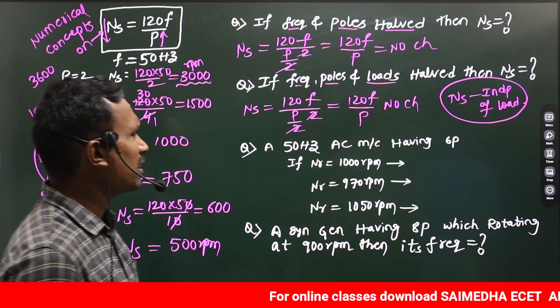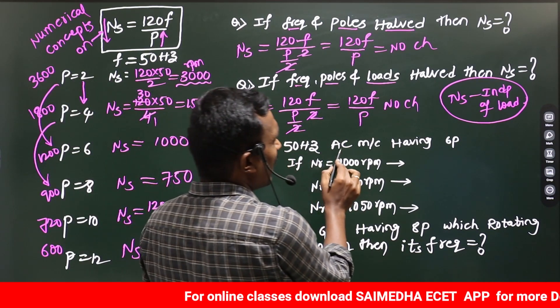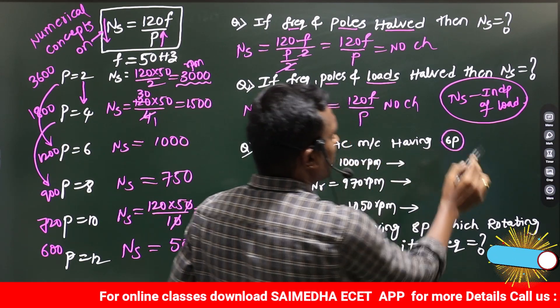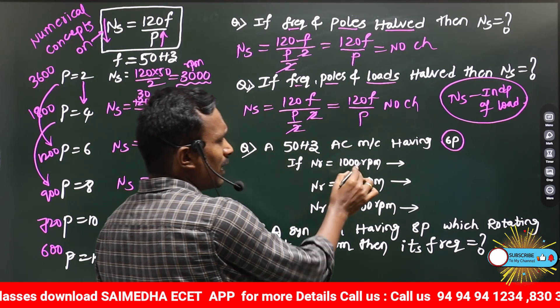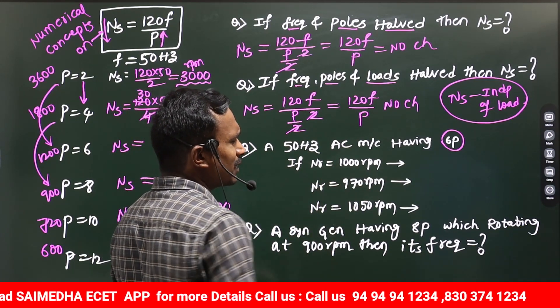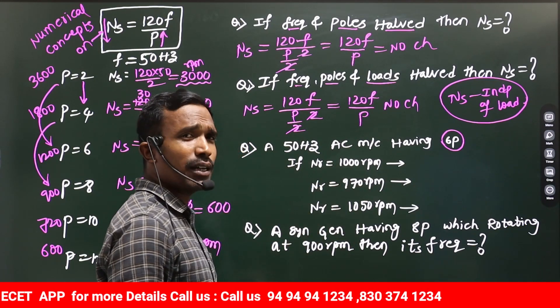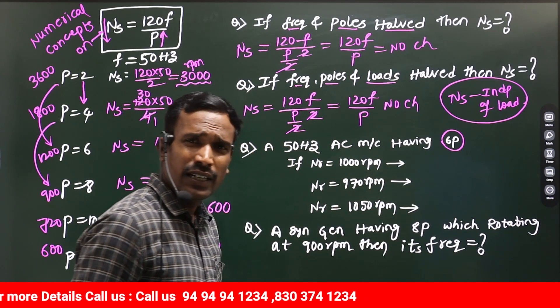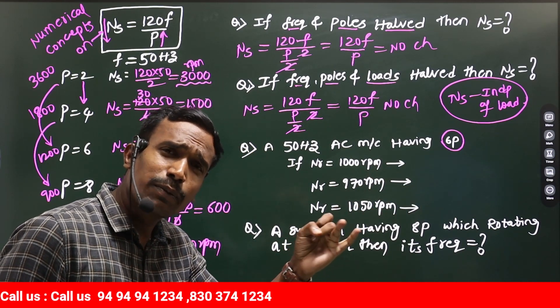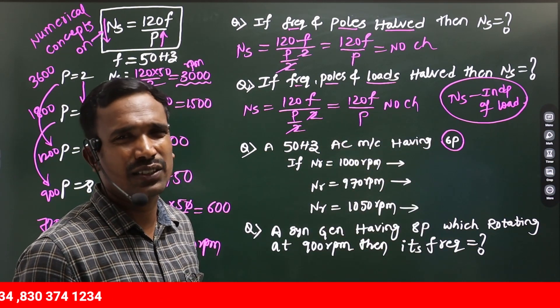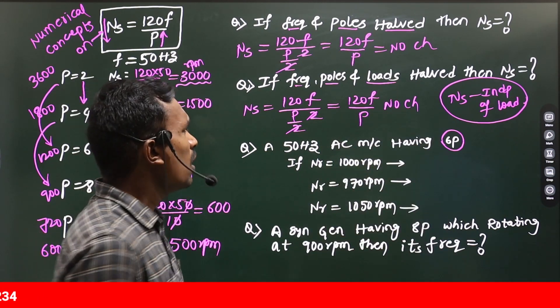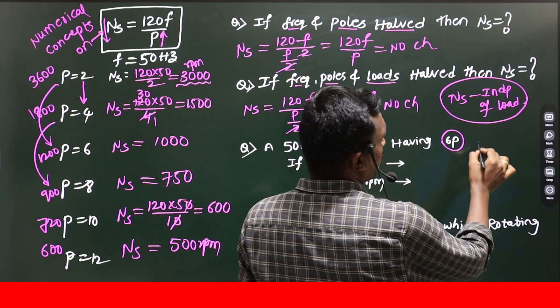For example, they ask you a question: a 50 hertz AC machine having 6 number of poles. If rotor speed 1000 rpm, 970 rpm, 1050 rpm, then what it will be? Option A, induction motor. Option B, induction generator. Synchronous machine. Like that. They will ask you a question. So, first of all, we need to know the synchronous speed.